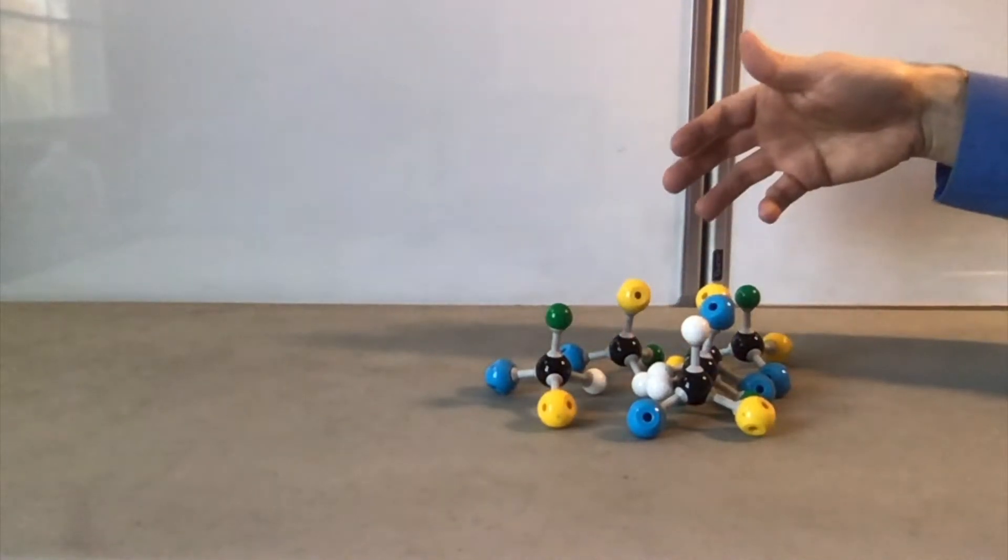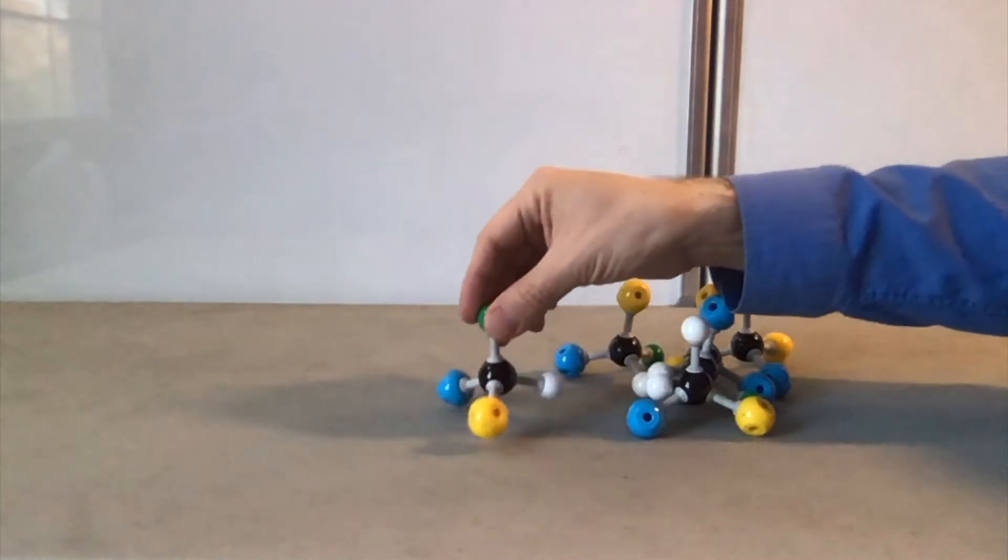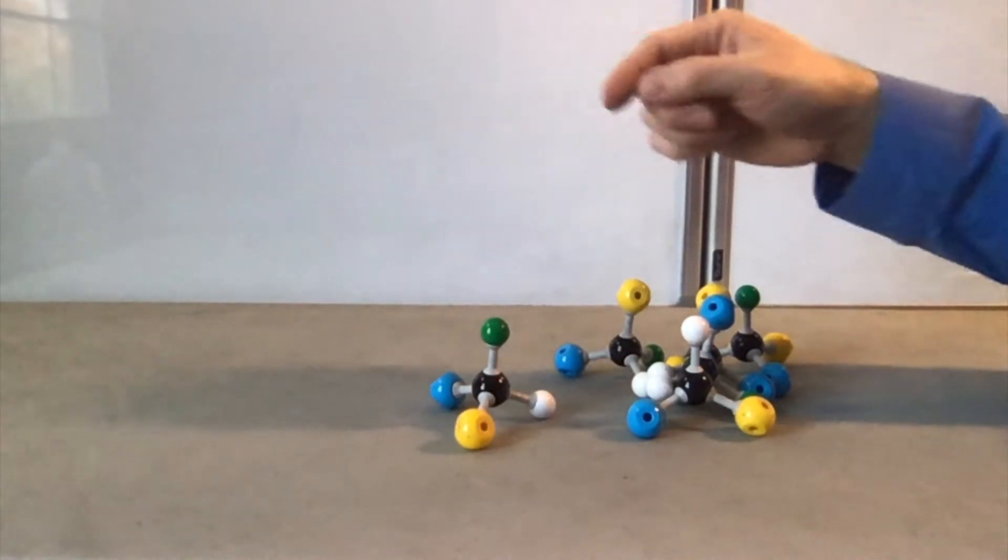I have a bunch of molecules made up here where the central atom is black and there are four atoms around it. It's always yellow, blue, green, and white.